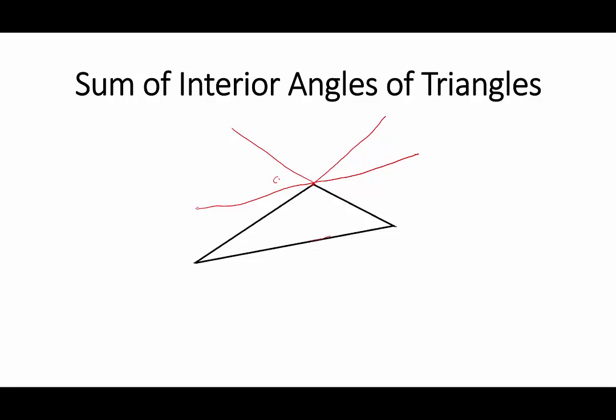Let's call this angle A, let's call this angle B, and let's call this angle C. We can see that this angle is congruent to this angle; let's call it B prime.